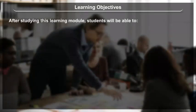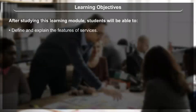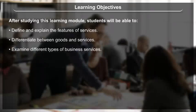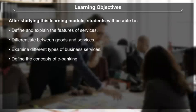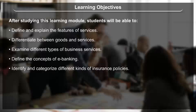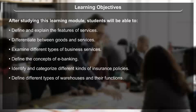Learning Objectives: After studying this learning module, students will be able to define and explain the features of services, differentiate between goods and services, examine different types of business services, define the concepts of e-banking, identify and categorize different kinds of insurance policies, and define different types of warehouses and their functions.